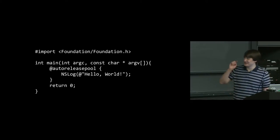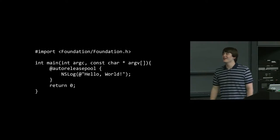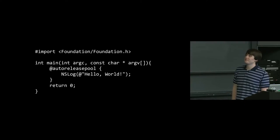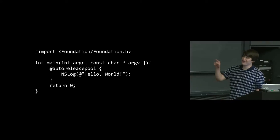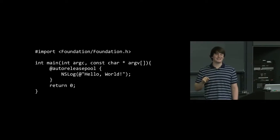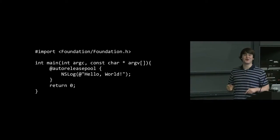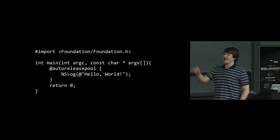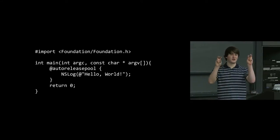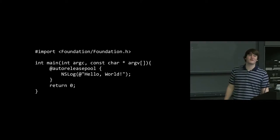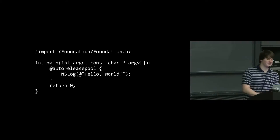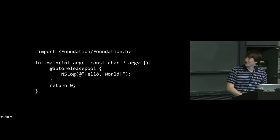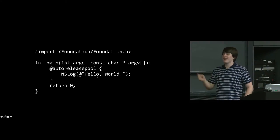Another thing that looks different is the @autoreleasepool — that's something we deal with next week related to automatic memory management. The @ symbol is a very Objective-C thing — if you see code with an @ symbol, you can reason it's Objective-C. In the case of Hello World, by putting @ in front of a string literal like @"Hello World", we are making it an Objective-C type string — more explicitly, an NSString. So @"hello world" is an object that we pass to the NSLog function.